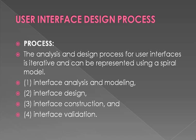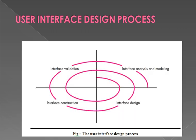We already covered the spiral model, and the same implementation we will use here also. To perfectly complete the process we need to follow the spiral model. In this spiral model there are four important steps: interface analysis and modeling, interface design, interface construction, and validation. This is a simple diagrammatical approach — we start with analysis, then interface design, interface construction, and finally validation.